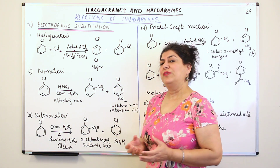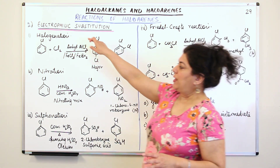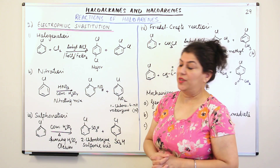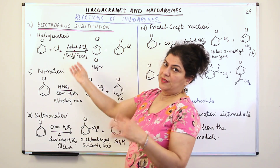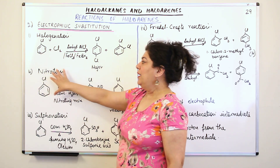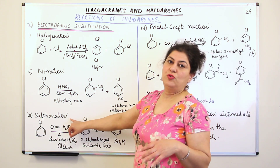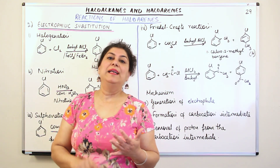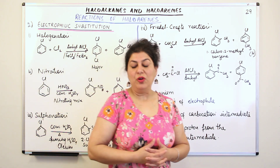Electrophilic substitution. You have studied electrophilic substitution of benzene in class 11, where halogenation, nitration, sulfonation, and Friedel-Crafts alkylation and acylation are done. When chlorine or any halogen is substituted in the benzene ring, it is known as halogenation. If the nitro group is added, we call it nitration. If a sulfonate is produced, we call it sulfonation. And if alkylation or acylation — that is methylation, ethylation, or acylation — takes place, we call it Friedel-Crafts alkylation or acylation.